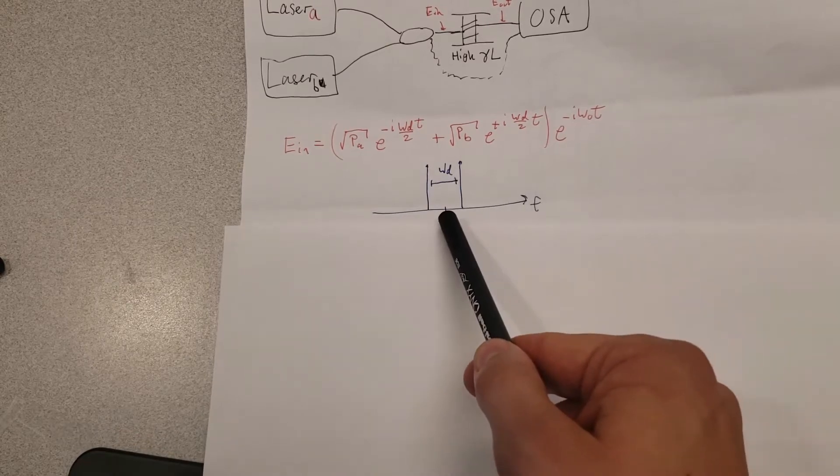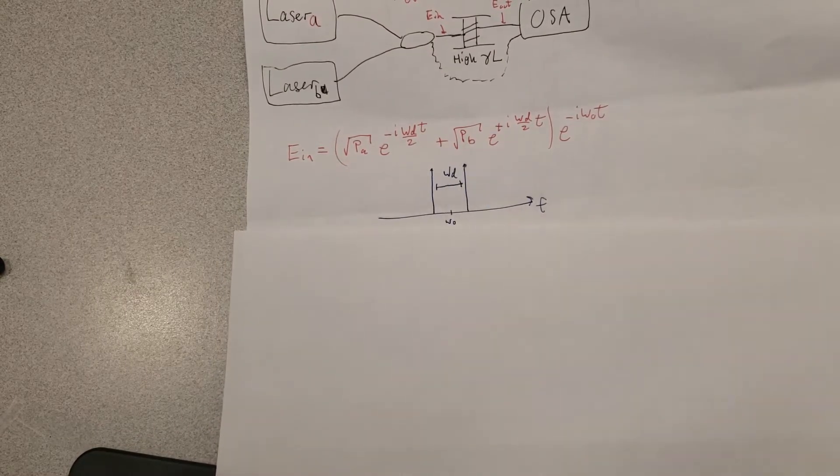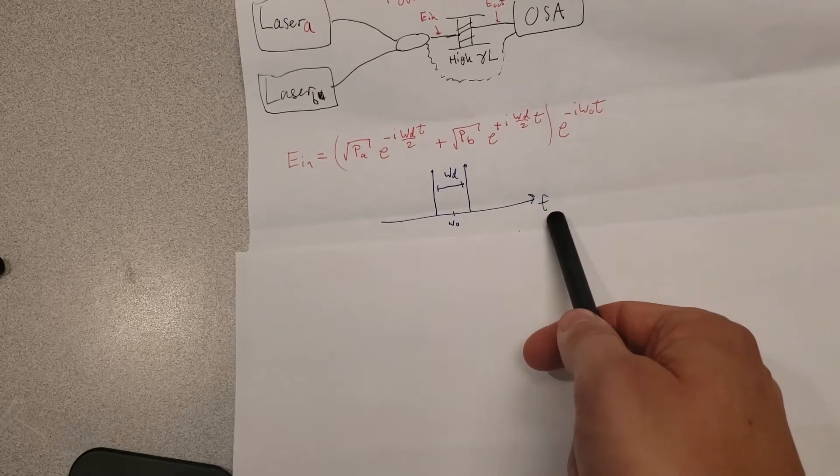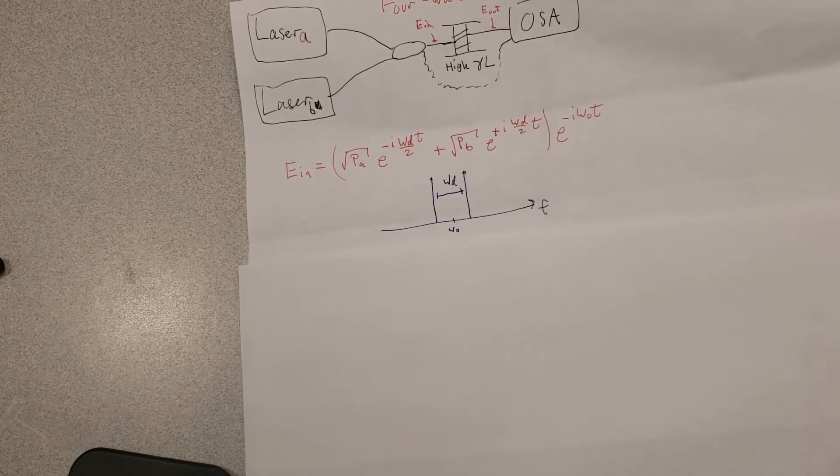We have the frequency spectrum with the carrier or central frequency right here, then one laser right here and one laser here which is placed omega d apart in the frequency domain. This is f which indicates proper frequency and this is omega which is angular frequency.